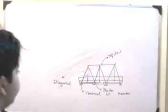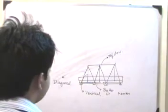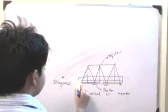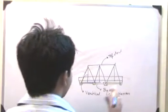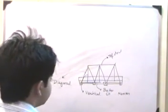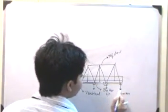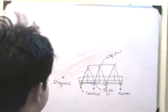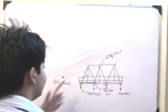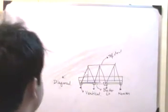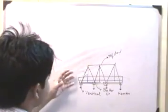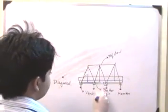If we idealize this: the deck carries loads and passes them to the stringers. The stringers pass the load to the floor beams, and the floor beams apply this load at the nodes of the truss. So the idealized assumption from the previous lecture — that loads are applied at the nodes — basically holds true. This is how loads get transmitted from the deck to the truss, and now we can solve for the internal forces in the various members.